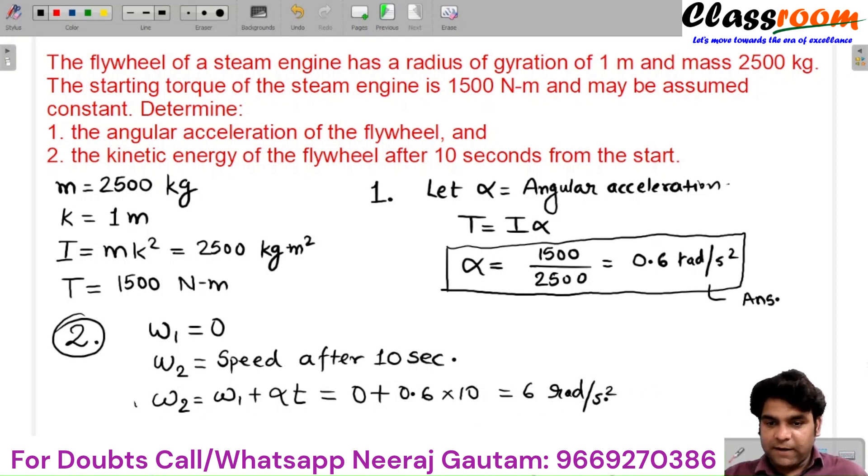In this way, I can determine the angular speed of the flywheel after 10 seconds. The kinetic energy of the flywheel after 10 seconds, based on this speed, is ½Iω₂².